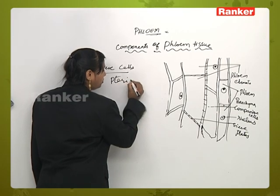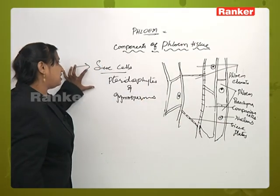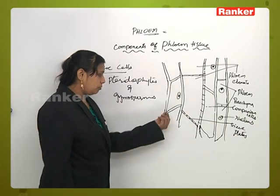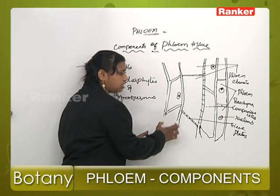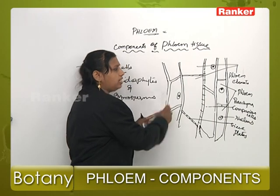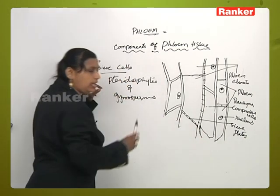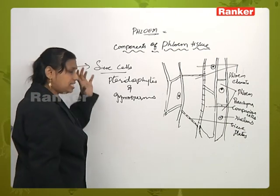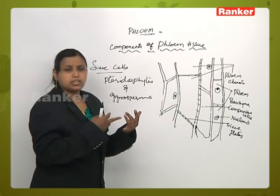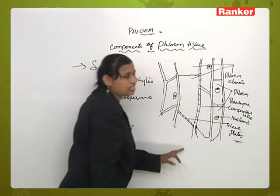In pteridophytes and gymnosperms, these sieve cells are present towards the ends of the lateral walls. The sieve plates are seen — there is an occurrence of sieve plates in these sieve cells. The presence of sieve plates occurs only in sieve cells and is not seen in sieve tubes. Sieve cells have a special character: the connecting link between one cell and another is a bridge-like structure called sieve plates. The occurrence of sieve plates is the characteristic feature of sieve cells, making them distinct from other sieve components of the phloem.